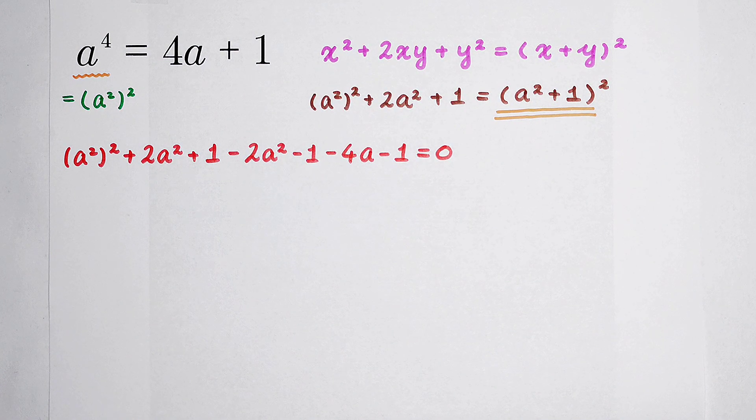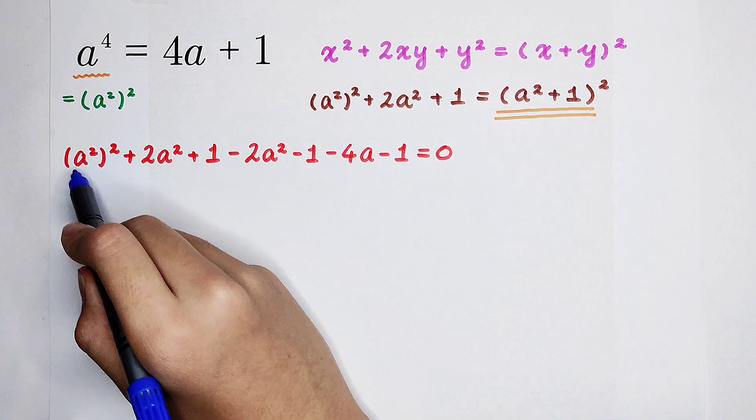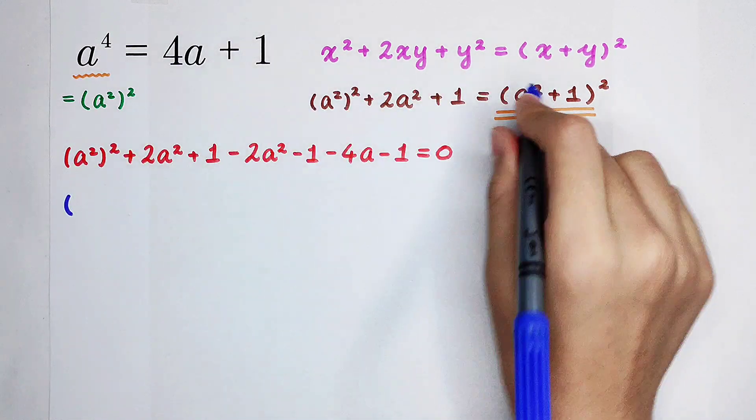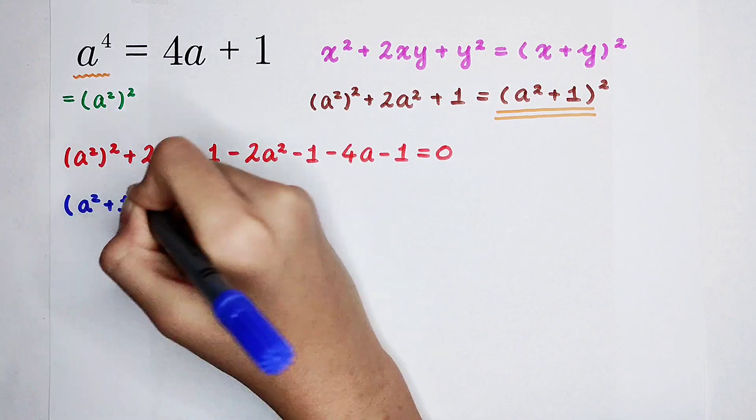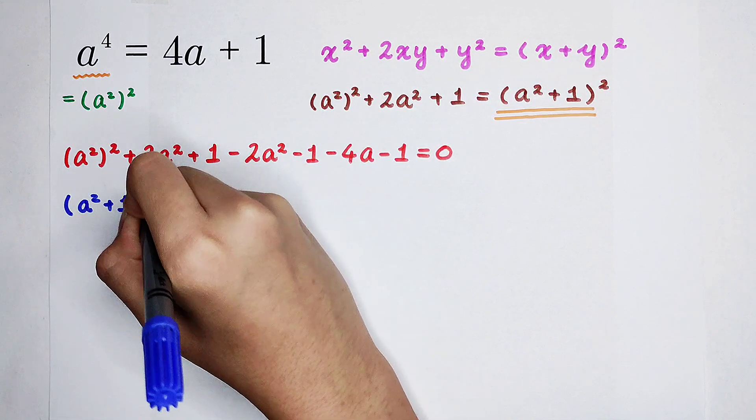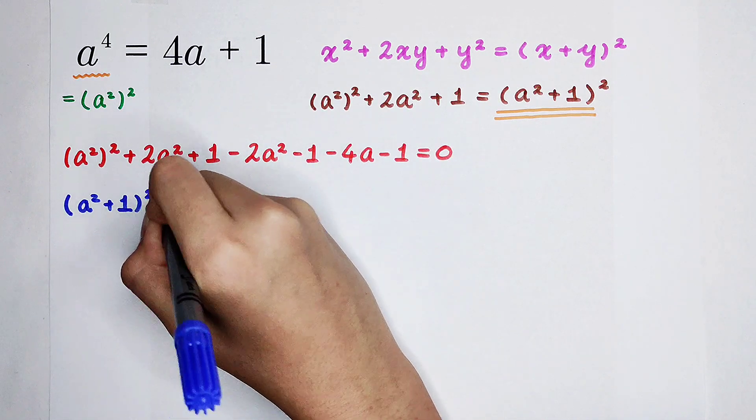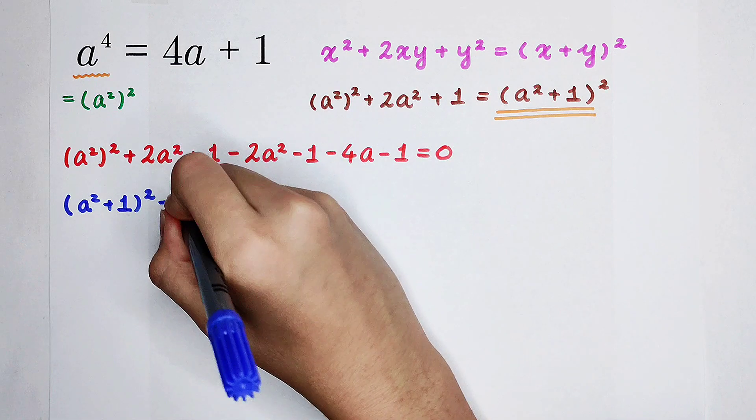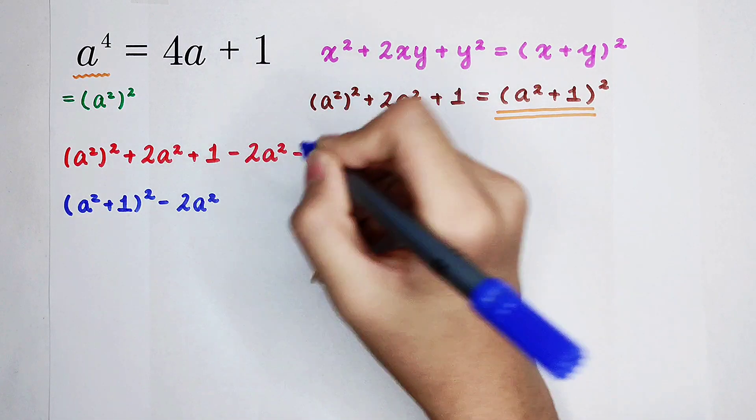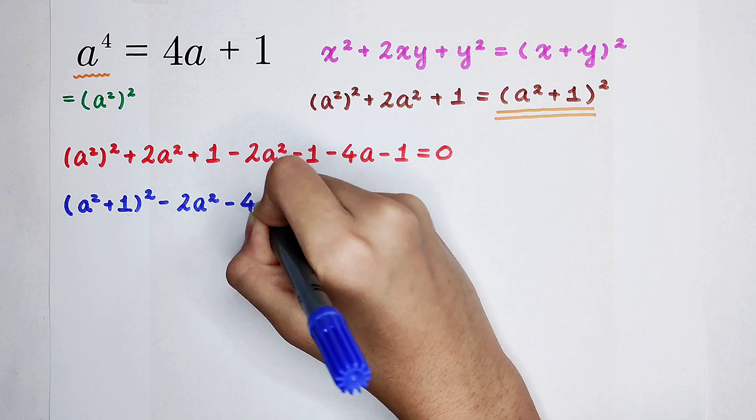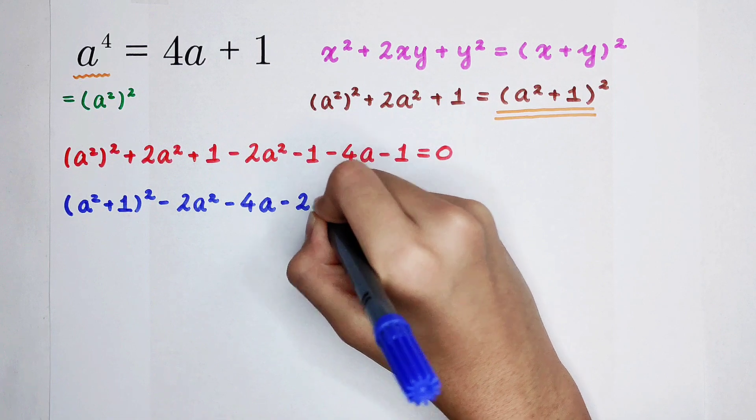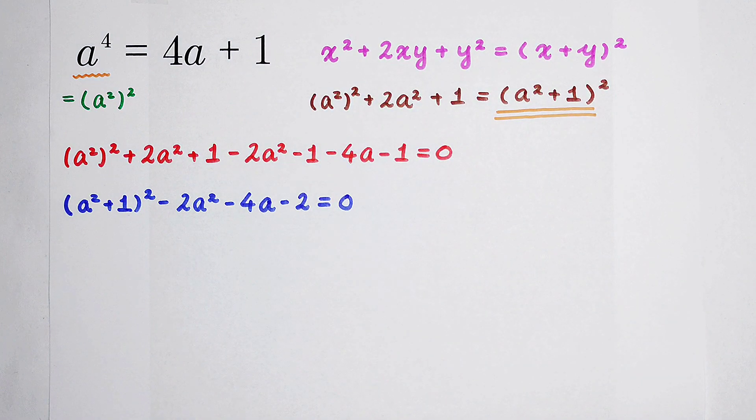The left hand side is very long but the right hand side is just 0. Because a squared all squared plus 2a squared plus 1, that is this. Write it. a squared plus 1 all squared, minus 2a squared, minus 4a. Here, minus 1 minus 1, it is minus 2.